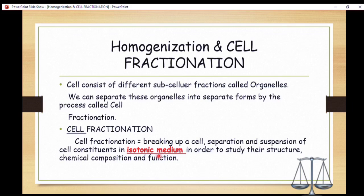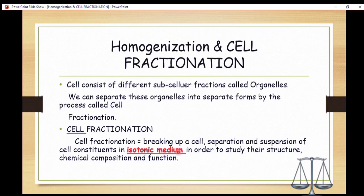The key term here is isotonic medium. We require an isotonic medium in cell fractionation because it helps maintain a constant pH. The isotonic medium has the same concentration as the cell, meaning the same concentration gradient, so there will be no osmosis which could damage the cell and prevent further studies. This isotonic medium helps to preserve the structure and chemical composition of the organelles very effectively.